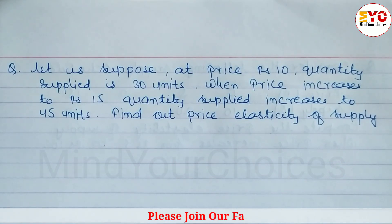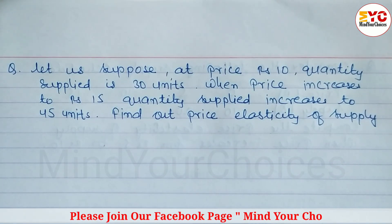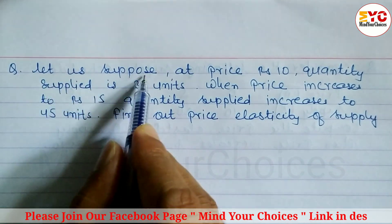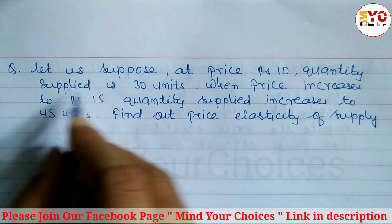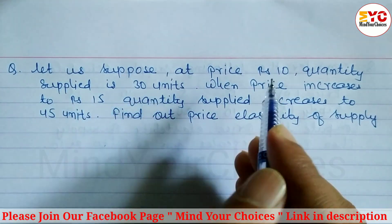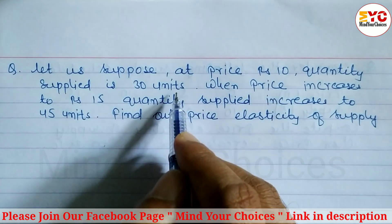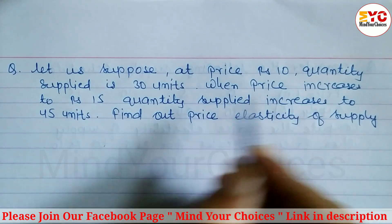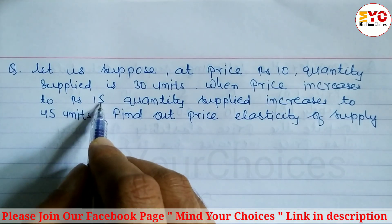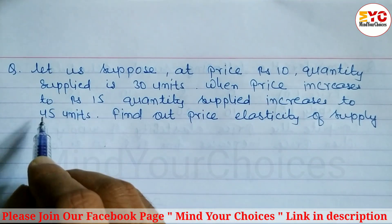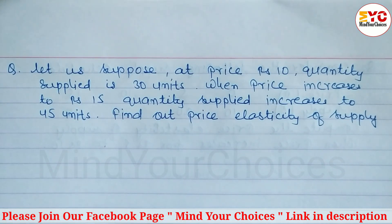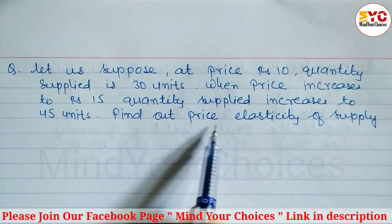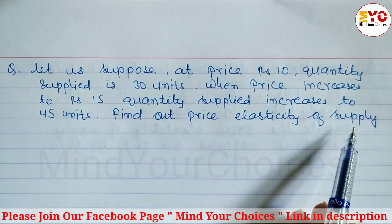This question is taken from elasticity of demand and supply. At price rupees 10, the quantity supplied is 30 units. When the price increases to rupees 15, quantity supplied increases to 45 units. We know that when the price of a commodity increases, quantity supplied also increases. We have to find out the price elasticity of supply.